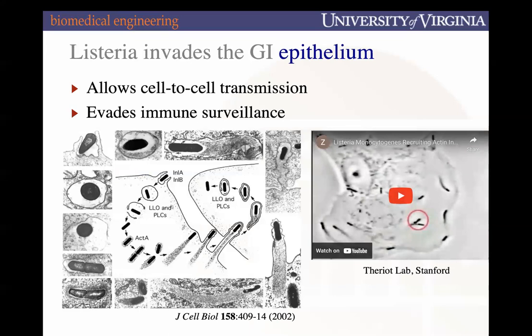It evades immune surveillance because when it's trying to go into an adjoining cell, it's actually wrapped around by the cell membrane. Every cell in your body has a protein on it that says it belongs to you. When those cells are healthy, that protein is expressed properly, and if an immune cell comes over and assesses this cell, it will see the protrusion but recognize it has regular proteins — it's a normal cell. So it evades immune surveillance because it's wrapped by our own cell's membrane.